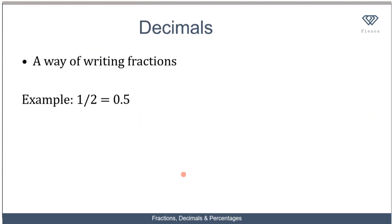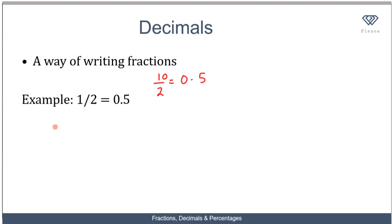Now let's talk about decimals. Decimals are also a way of expressing fractions. Half, as we talked about, can be expressed as 0.5. To get this, you do normal division: 1 over 2 — 2 cannot divide 1 so you write 0 point, then you get 0.5.